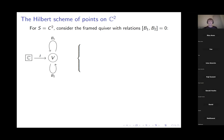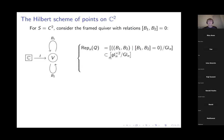The space of representations of the unframed quiver — Rep_n(Q) — means ignoring the framing for now. To specify an n-dimensional representation, we choose an n-dimensional vector space and prescribe two endomorphisms. We can choose an isomorphism of this vector space with ℂⁿ, after which the endomorphisms define elements of GL_n, and we quotient by GL_n.